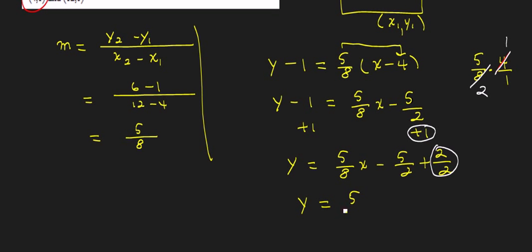So we're almost done here. 5 eighths x plus, oh, not plus, excuse me. We're going to actually watch our signs. Minus 5 halves plus 2 halves. That's a minus, and that's a plus, so we're going to have minus 3 halves. And so the equation of the line is y is equal to 5 eighths x minus 3 halves.